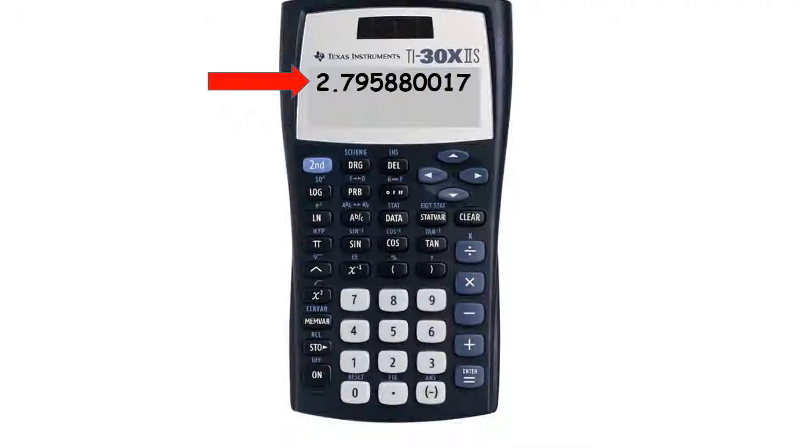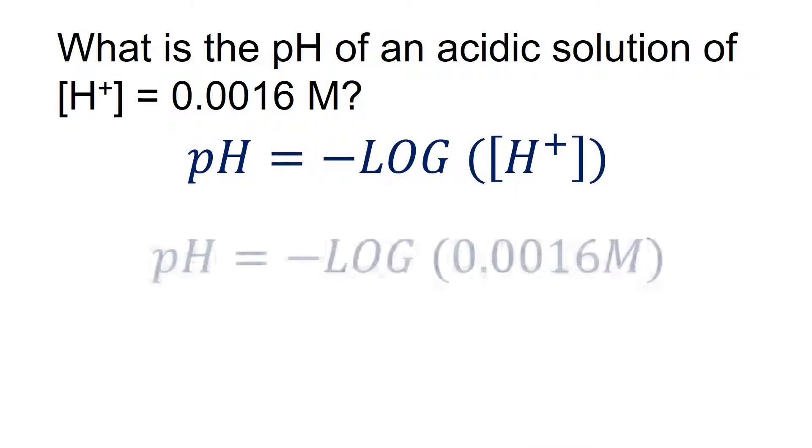We're only going to keep a couple of significant digits. We'll just stop right there after that one digit after the decimal point. Since the digit after that's a 9, we're going to round that up to an 8. So we'll say that our pH is 2.8. When we come back to our calculation, we've plugged in our negative logarithm of 0.0016 molar, and we end up with our pH of 2.8.